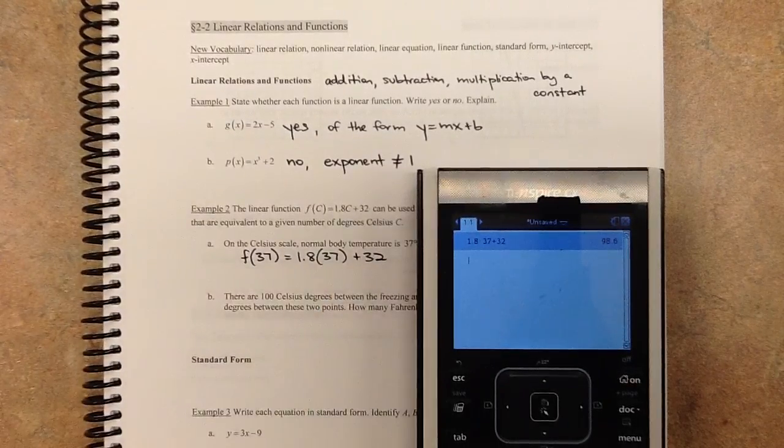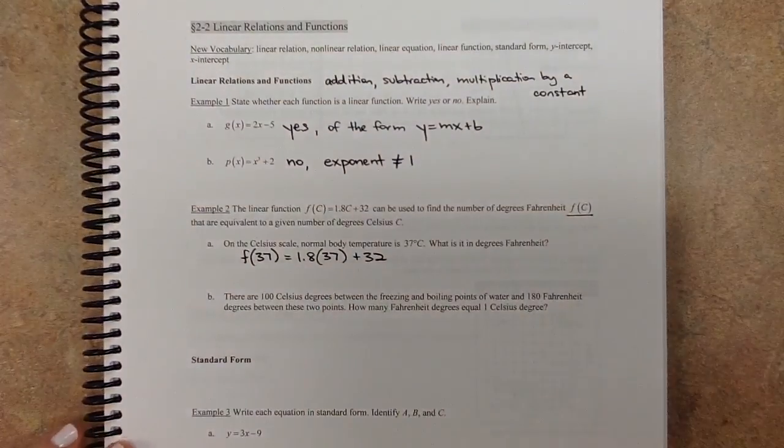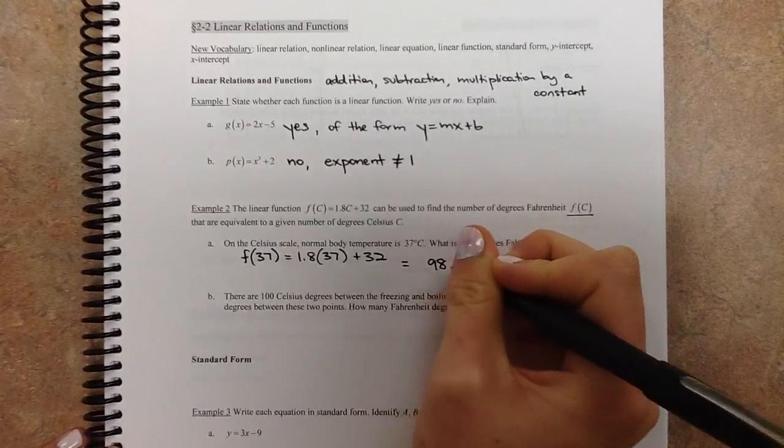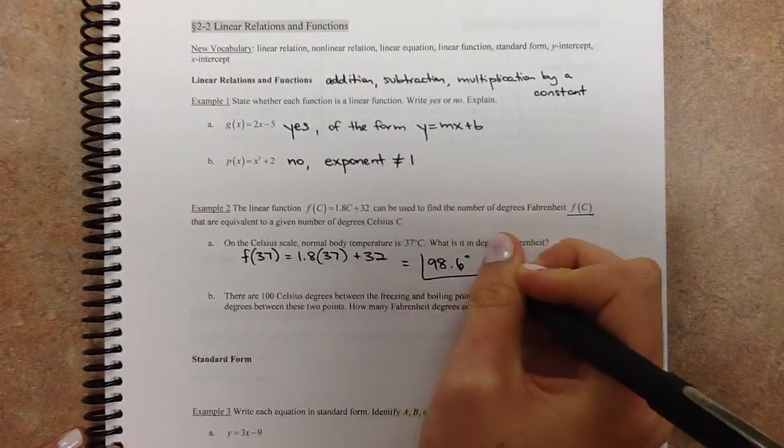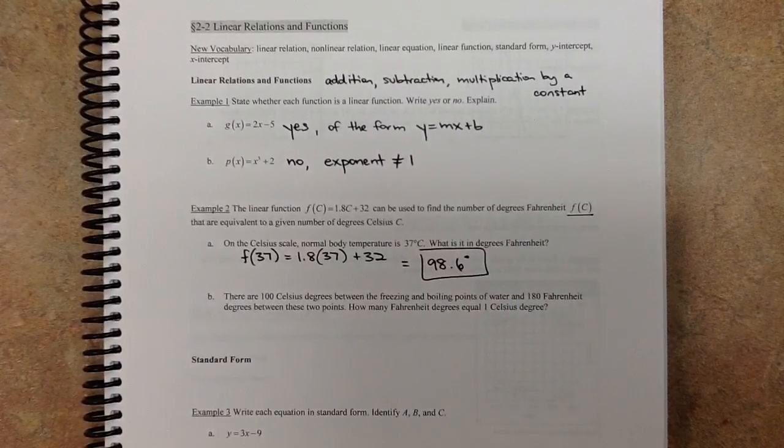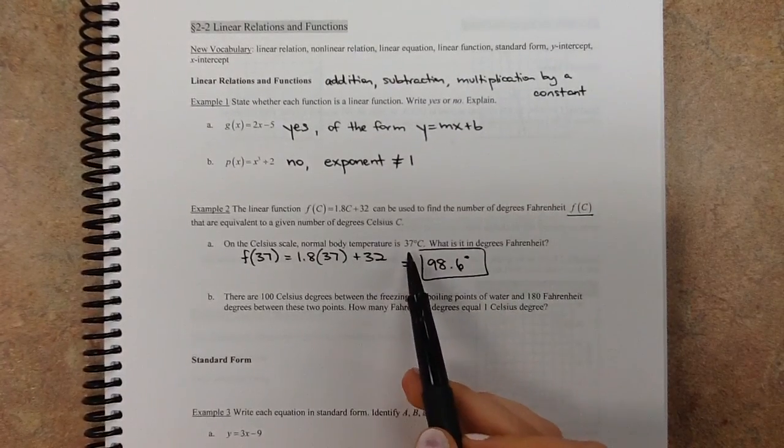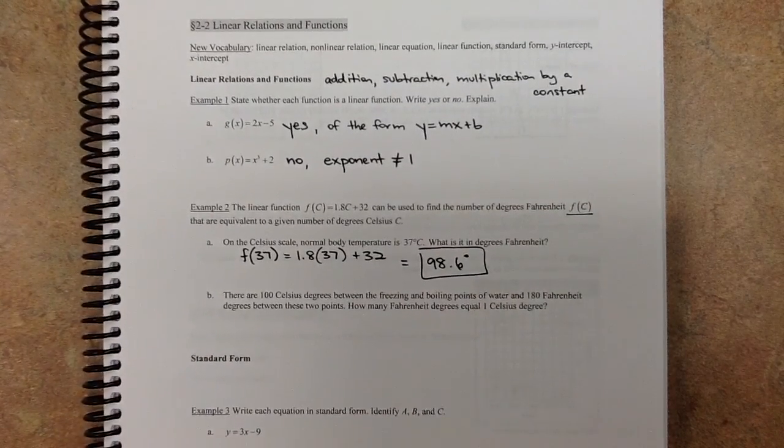So that would be 98.6, which I'm sure you guys probably recognize because you probably know what the normal body temperature is in Fahrenheit. So 98.6 and you can see that's kind of cool. 37 is apparently what it is in Celsius.